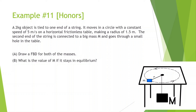A two kilogram object is tied to one end of a string. It moves in a circle with a constant speed of five meters per second on a horizontal frictionless table, making a radius of 1.5 meters. The second end of the string extends to a big mass M and goes through a small hole in the table. Draw a free body diagram of both masses. We have Fg and force of tension on the hanging mass, and force of tension on the circling mass.